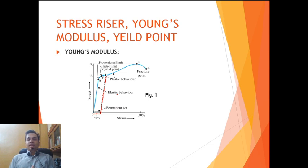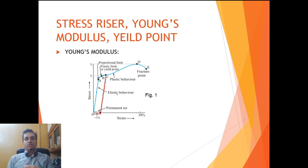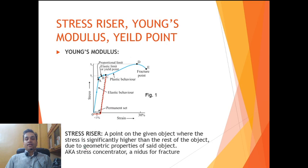Not every object is a perfect cylinder or square — many have geometric asymmetry, so when you apply stress through a body it may not be distributed equally. Some places will have a larger amount of stress and others a smaller amount. The places where a large amount of stress is concentrated at a particular point in the geometry of the body are called a stress riser or stress concentrator, which is secondary to the geometric properties of the object. If too much stress is applied, the body will break or fail at the point of the stress riser.